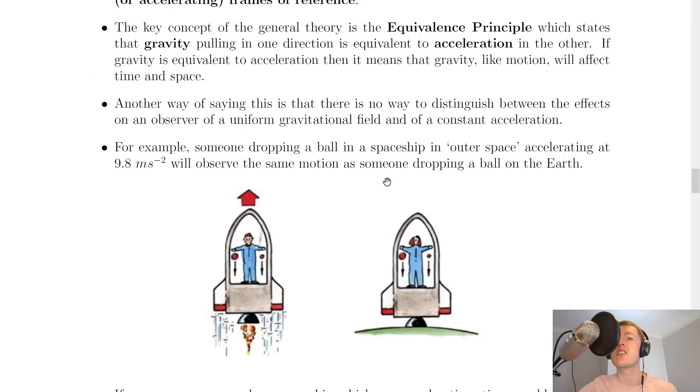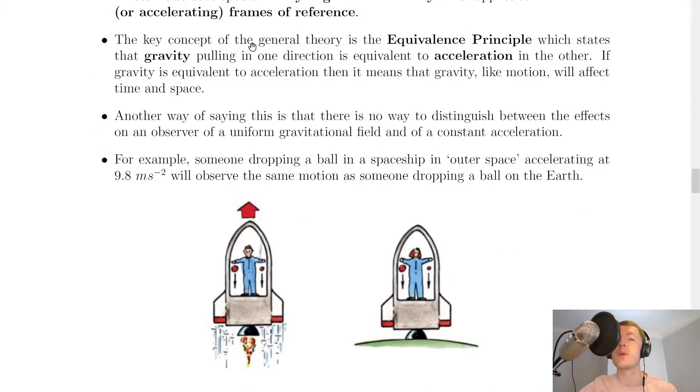So going back to the notes now, this leads us to the idea of the equivalence principle. And it says here that the key concept of the general theory is the equivalence principle, which states that gravity pulling in one direction is equivalent to acceleration in the other. If gravity is equivalent to acceleration, then it means that gravity, like motion, will affect time and space.